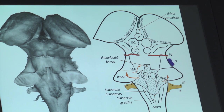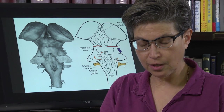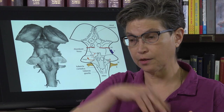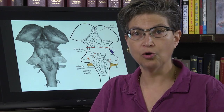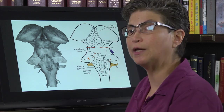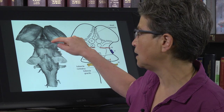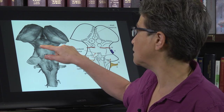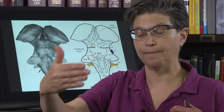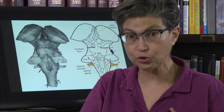The superior colliculi are involved in orienting movements to unexpected sounds, unexpected movement, or an unexpected tap on the shoulder — anything that is unexpected where you orient towards that stimulus. That orientation movement is supported by the superior colliculus. The inferior colliculus is a necessary part of the auditory pathway, but we're not going to dwell on the auditory pathway at this point.